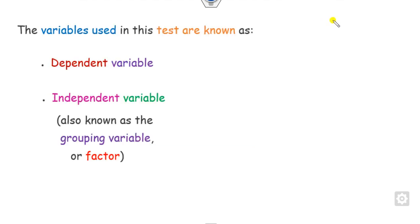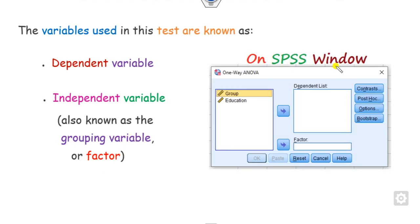When working with ANOVA, there is a need for two variables: one is the dependent variable and the second is the independent variable. The independent variable is also called the grouping variable or the factor. In your SPSS window, you can see there is a variable called 'dependent' and another called 'factor,' which is also the independent variable. You have to define both groups.